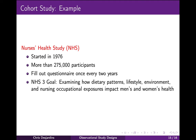An example of a prospective cohort study is the Nurses' Health Study. It was started in 1976 and is now in the third generation with over 275,000 participants, who fill out a questionnaire once every two years. The original goal was to investigate the risk factors for major chronic diseases in women. The most current study includes both men and women from a variety of health-related fields and examines how dietary patterns, lifestyle, environment, and nursing occupational exposures impact their health.